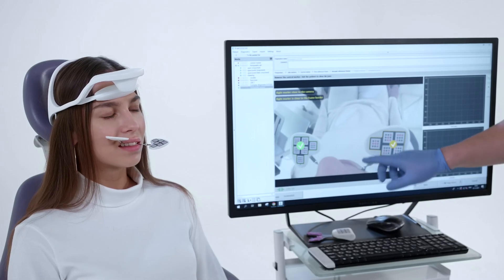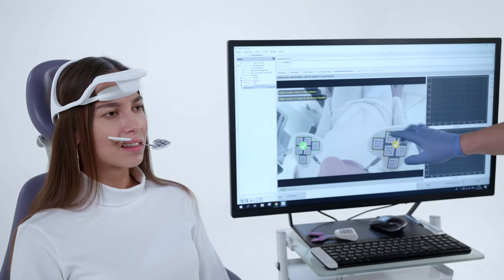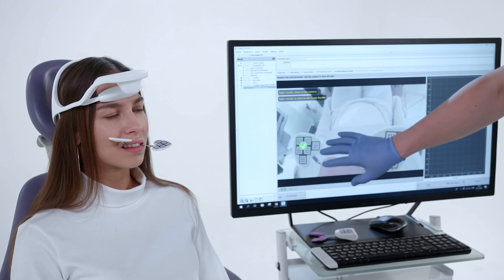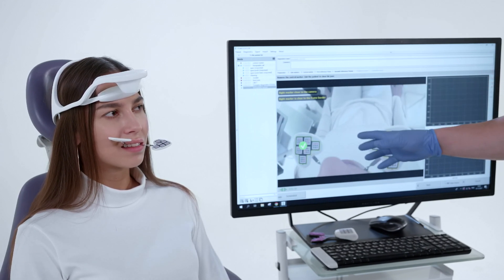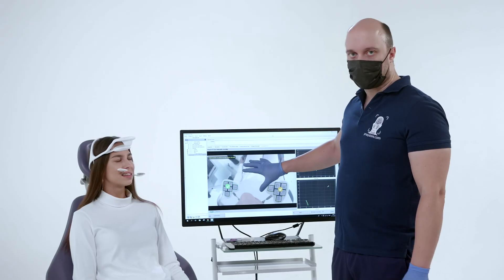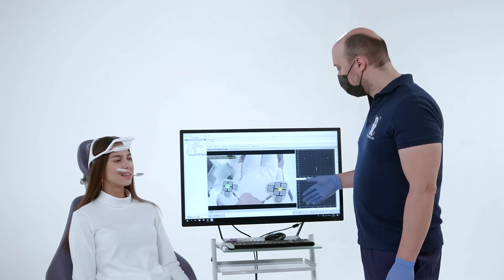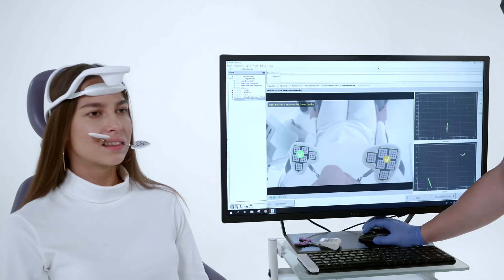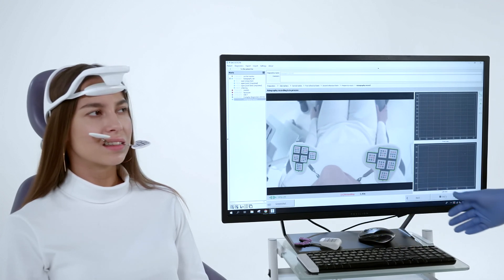Second stage. Fix the position of the side markers. At this stage, the patient's jaws must be articulated in the usual occlusion. The camera can then record trajectories. Axiography starts after pressing the start recording button.